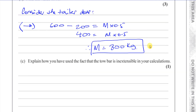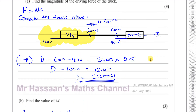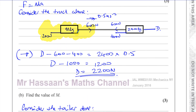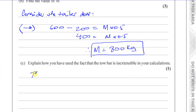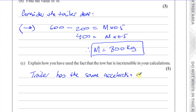Part C: explain how you have used the fact that the tow bar is inextensible in your calculations. Well, we basically assumed that both the trailer and the truck have the same acceleration. Since the truck is accelerating at 0.5 meters per second squared and is connected to the trailer by an inextensible tow bar moving in the same straight line, the truck and trailer must have the same acceleration.